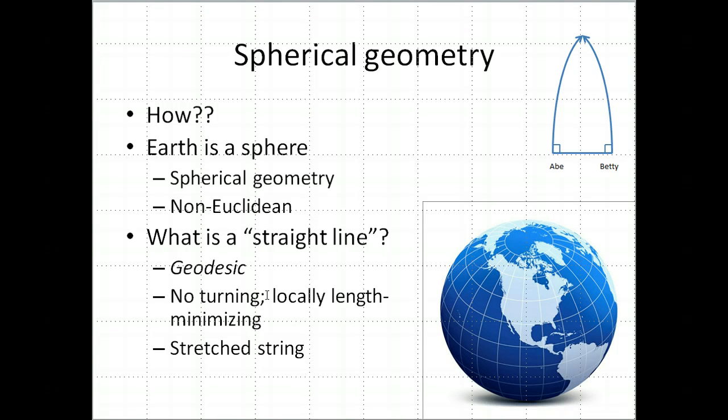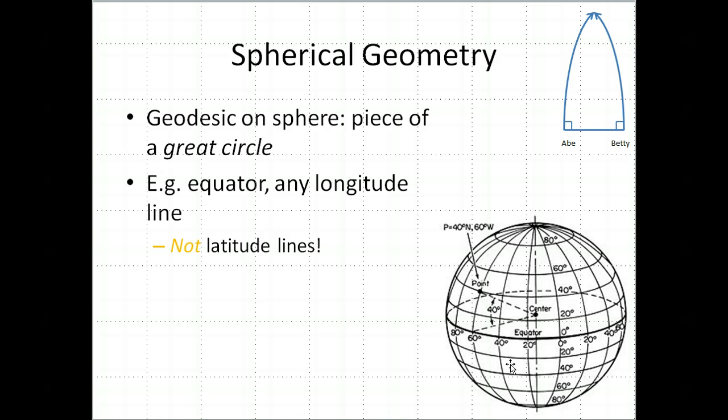Another way to describe it is it should be a curve that's locally length minimizing, which is a fancy way to say that if you put a string between two points on this globe and you stretch it tight, that's going to be a geodesic. So, the term geodesic replaces the term straight line, although I still might call them straight lines because they're really the closest thing you can get to a straight line on this curved surface in this curved geometry. So, for example, longitude lines are geodesics. In fact, any piece of a great circle.